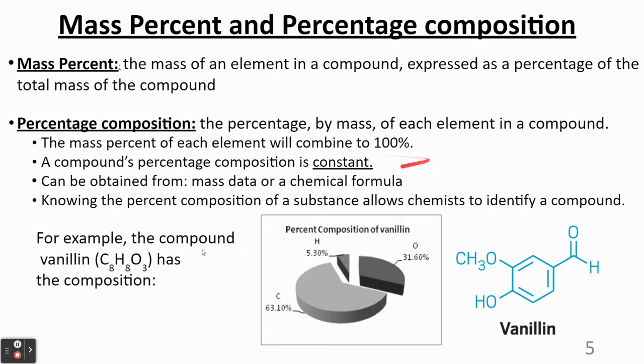And so if you add them all up, that should be 100, assuming that's all the elements in there, right? The percentages should add up to 100. And it doesn't matter how large or small the sample of vanillin is or whatever the compound is, it's always going to maintain these percentages, right?